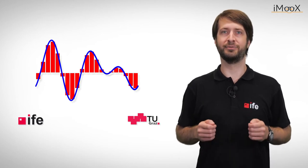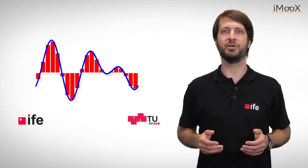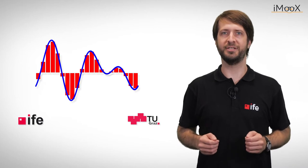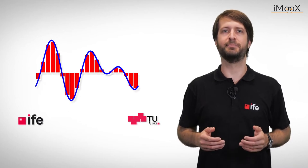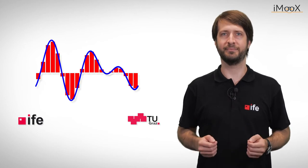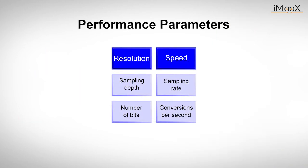Before we get into detail with the implementation of some basic ADC topologies, we would like to summarize the most important parameters of ADCs. Two of the things we probably want to know first about our analog-to-digital converter is how accurately and how fast it converts an analog input signal into a digital output value. So the main two parameters to look for are resolution and speed.